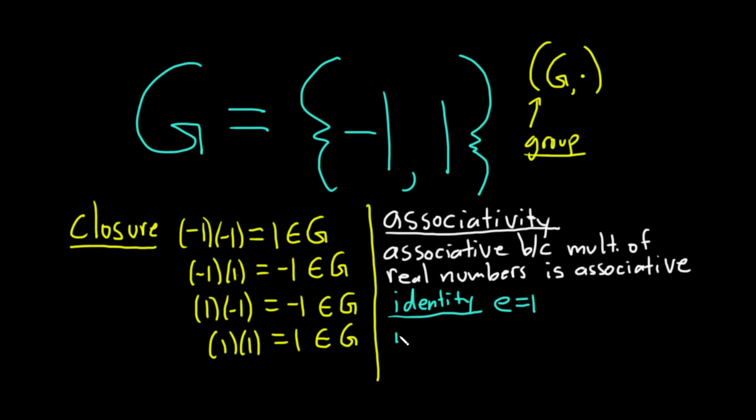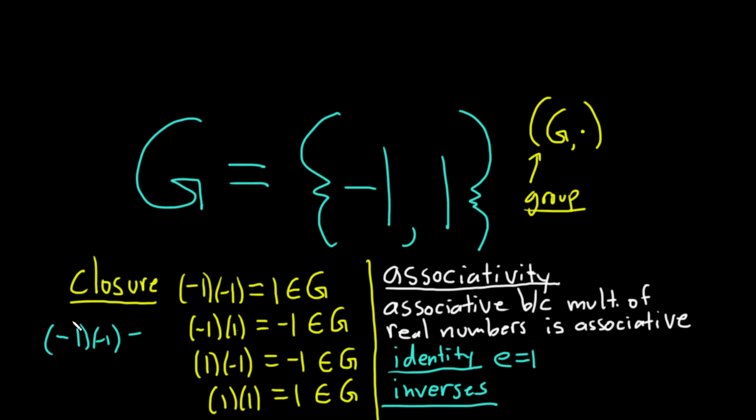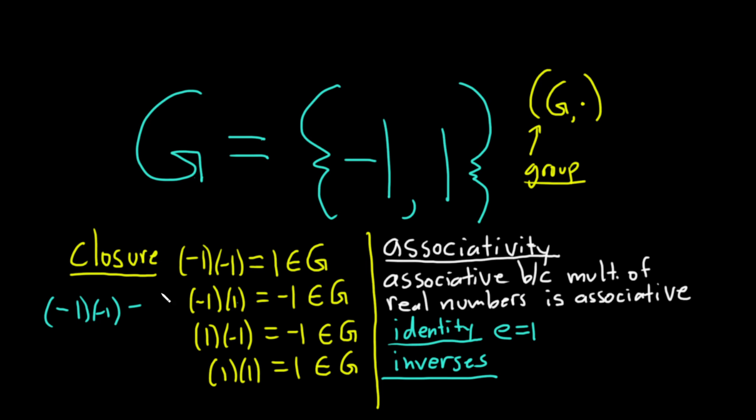And then we have inverses. So we need the existence of inverses. It looks like every element is its own inverse, right? So for example, if you take negative one, what do you have to multiply by negative one in order to get one, which is the identity? Well, negative one, so negative one is the inverse of negative one, okay?